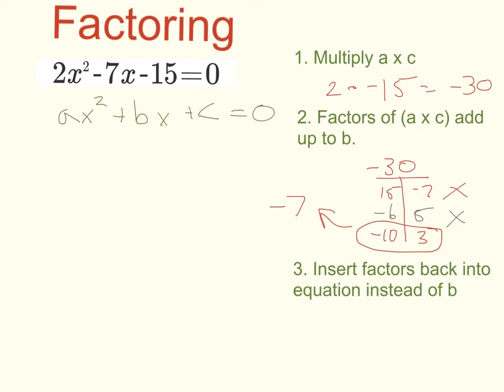Okay, so this next step is where it gets tricky. So now that we have these factors, we are going to insert those factors back into our starting equation instead of b. So instead of negative 7, I'm going to write it out as 2x squared minus 10x plus 3x minus 15 equals 0. So instead of negative 7, I just did negative 10 plus 3, which is negative 7. So I didn't change the actual value of the equation. I just separated b. So instead of 7, negative 7, I changed it into negative 10, positive 3. Alright, so that's where it gets a little bit confusing.